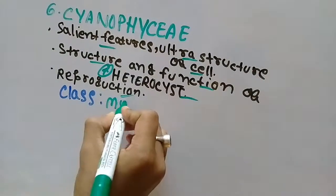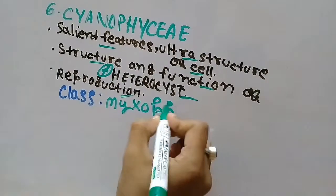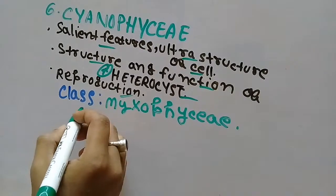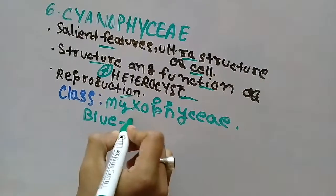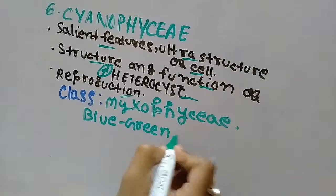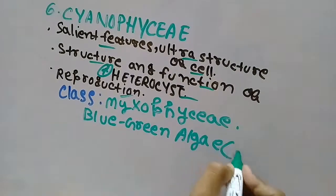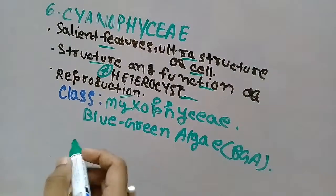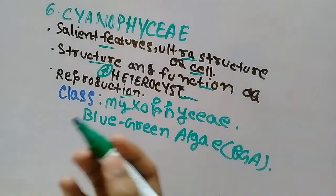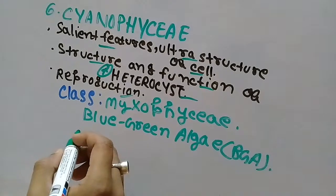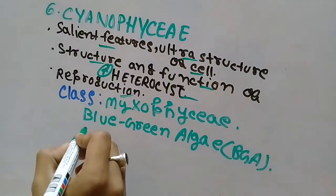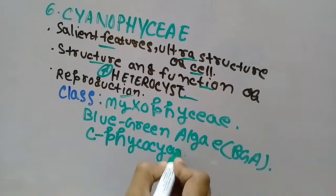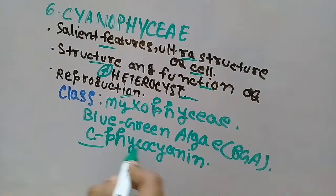Cyanophyceae are from the class Myxophyceae. Cyanophyceae are commonly known as blue-green algae, or BGA for short. Cyanophyceae are called Cyanophyceae because they contain a pigment in them that is phycocyanin. So this is the pigment present in them.